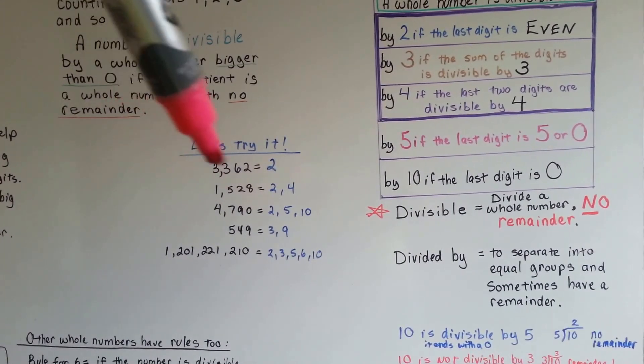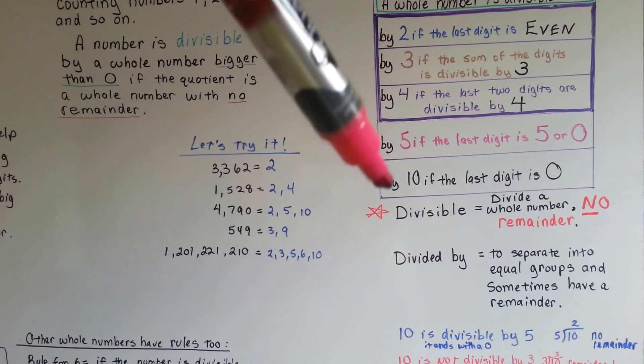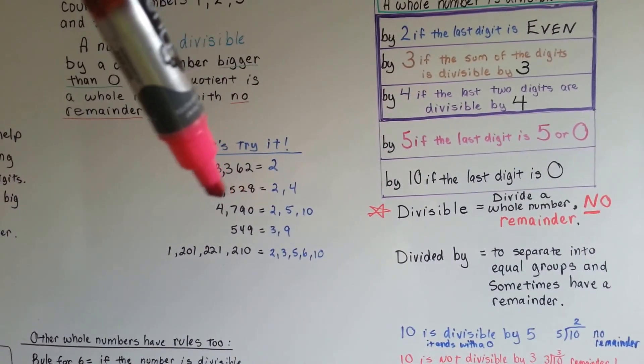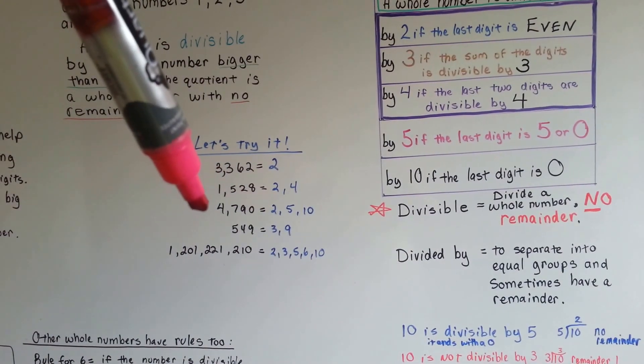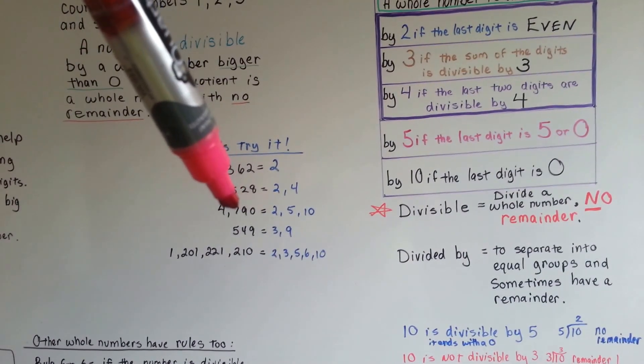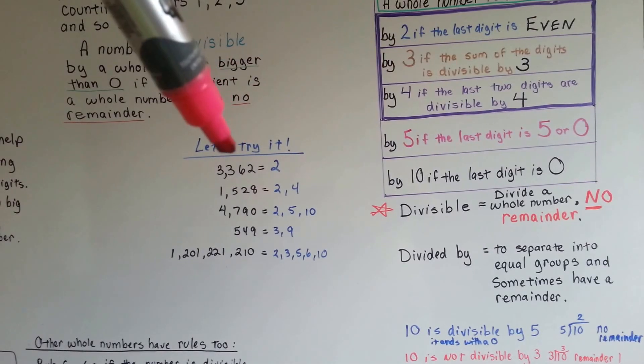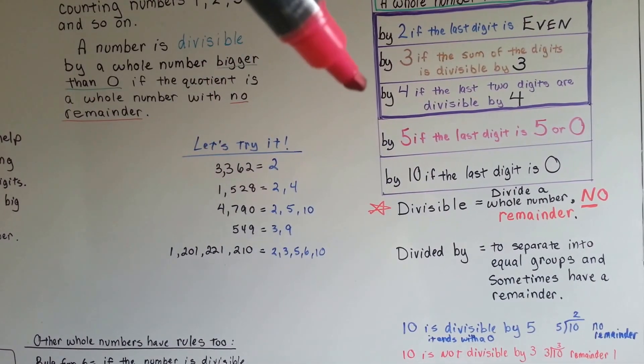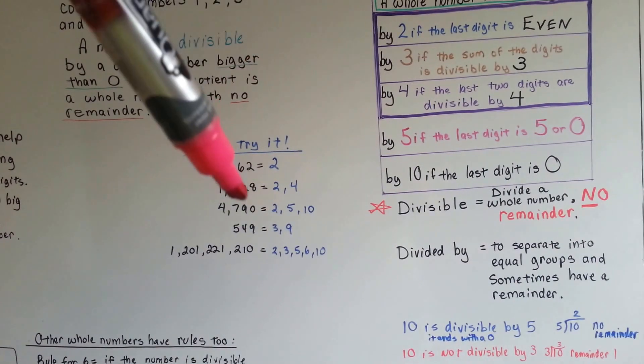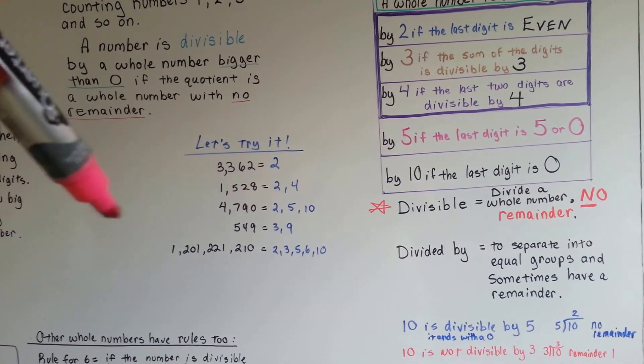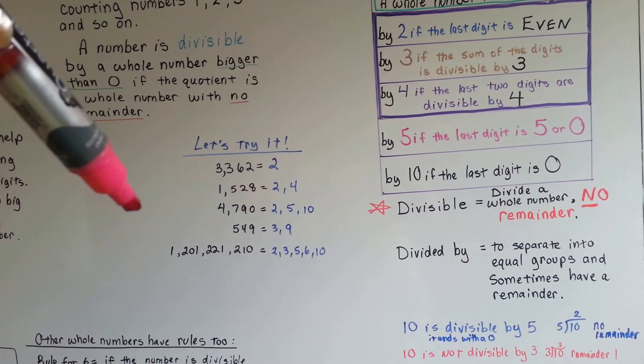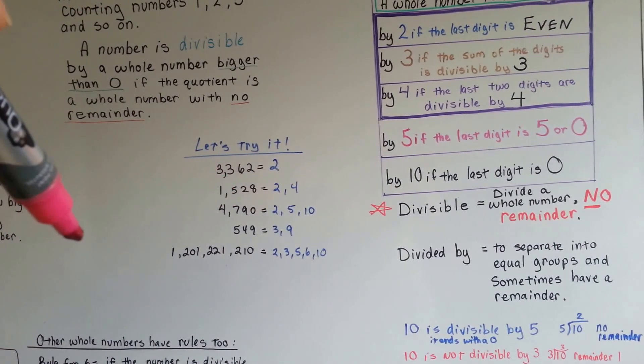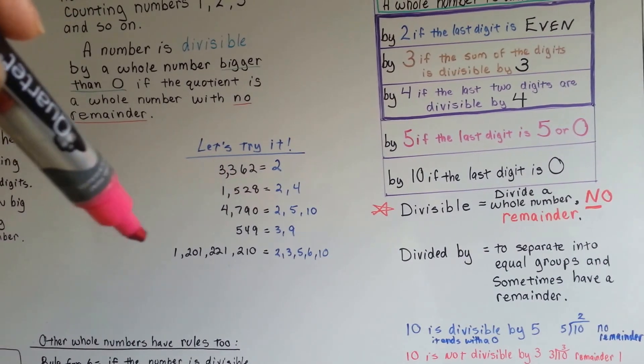4,790. It ends in a 0, so we know that the 5 and the 10 are good. The 0 is even, so it's a 2. Let's try adding it up. 4 and 7 is 11, and 9 is 20. Nope. 3 does not fit evenly into 20. How about the last two digits? 90. No. 4 times 20 is 80, and we can't fit evenly any more 4s in there without a remainder. So nope, 4 doesn't work.